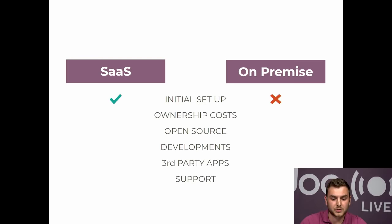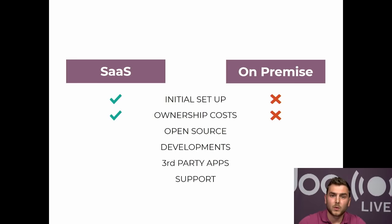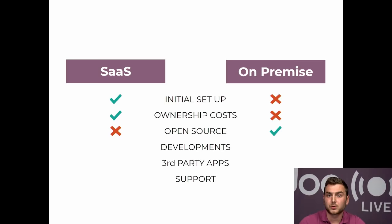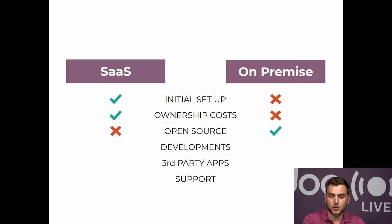The next point is ownership costs. If you host your customer on their own server, you will have to rent, buy, and maintain that server yourself. On the SaaS version, we take care of those ownership costs, so you have none to pay. Regarding open source: on our SaaS version, you won't have access to the source code. Odoo is still open core, but source code access is not available on SaaS. While if you host on-premise, you will have access to the source code and be able to do developments.